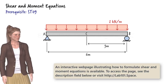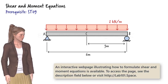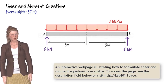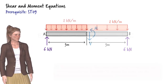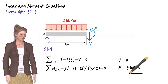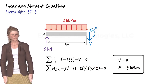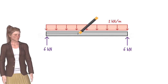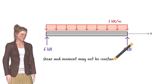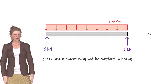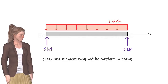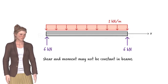For example, given this beam, we can determine shear and moment at C by first determining the support reactions and then by cutting the beam at C and writing and solving the equilibrium equations for segment AC. Since shear and bending moment may not be constant along the length of the beam, we need to be able to either express them mathematically or graphically so that their maximum and minimum values can be readily determined.